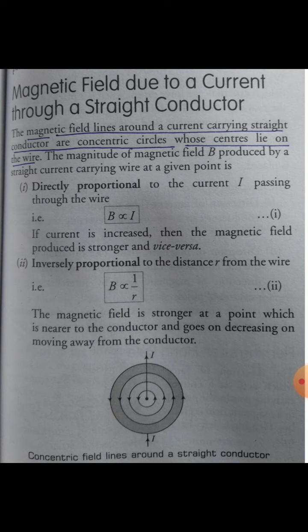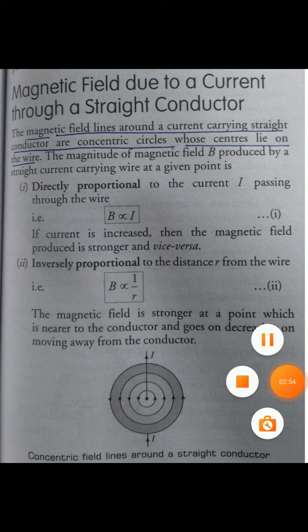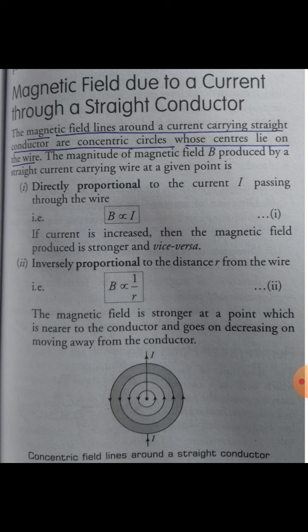You can see on the page that the field lines are circular. A straight conductor means a wire through which electricity flows in a horizontal or vertical straight-line path. When electricity passes through a straight conductor, the magnetic field lines around it are concentric circles — circles having the same center.